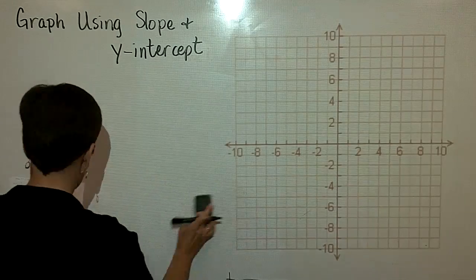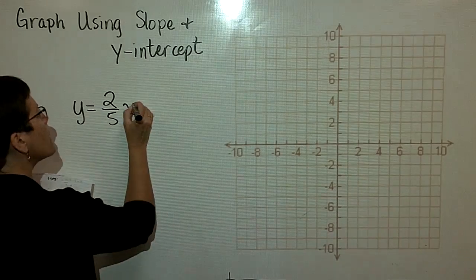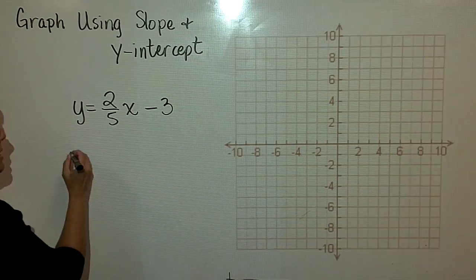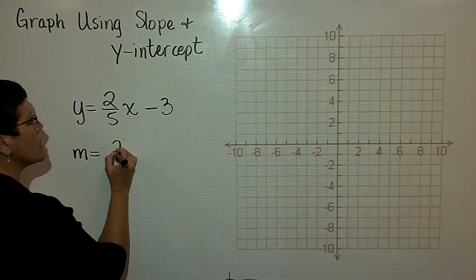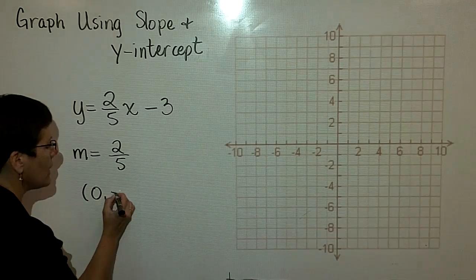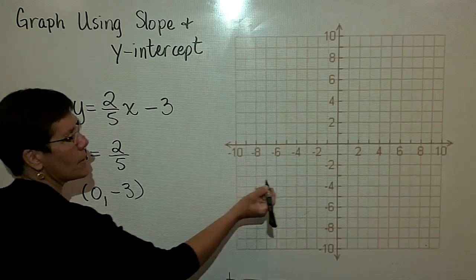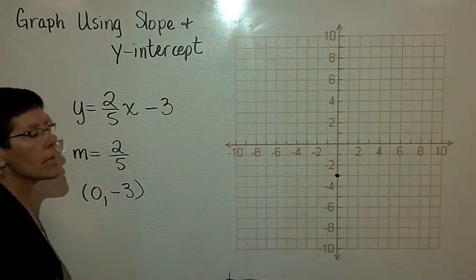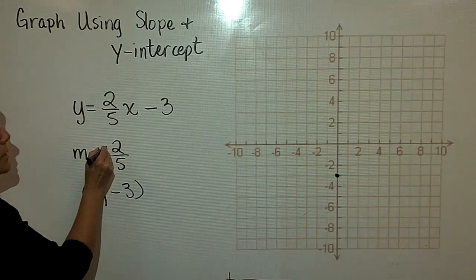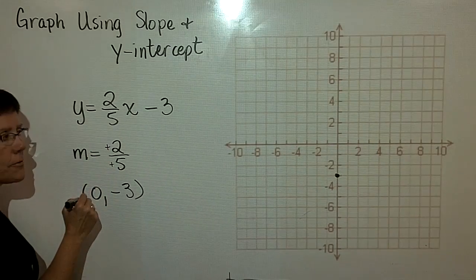So let's say that I give you y = (2/5)x - 3. You know then that the slope of this line is a positive 2 over a positive 5, and that the y-intercept is (0, -3). So let's start with that point right there. There's the (0, -3). The slope is the change in y is a positive 2, and the change in x is a positive 5.